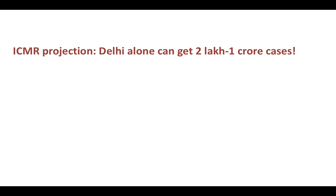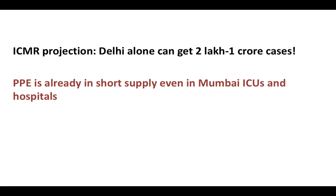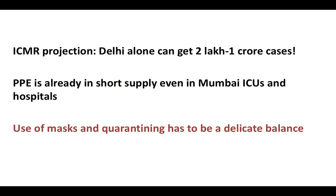We need to realize the gravity of the situation. An ICMR projection shows that Delhi alone, in the best case scenario, could get up to 2 lakh infections, or in the worst case scenario up to 1 crore cases. We are going to be overburdened with cases, PPE is already in short supply, and the use of masks and quarantining has to be a very delicate balance depending on each individual and the situation they work in.